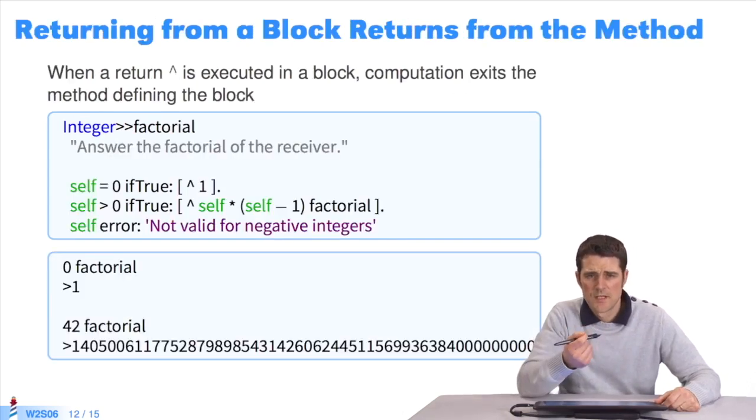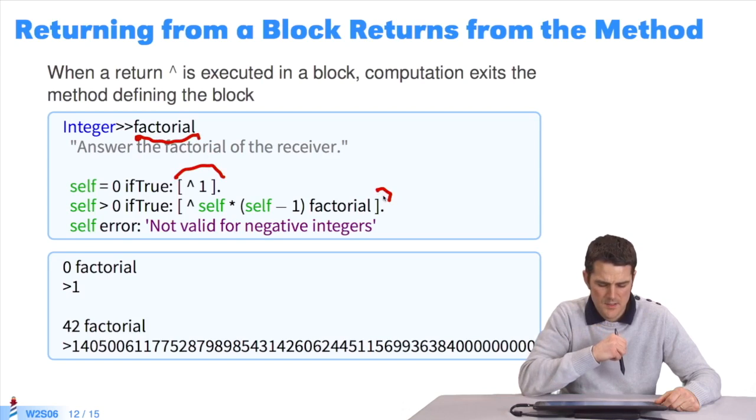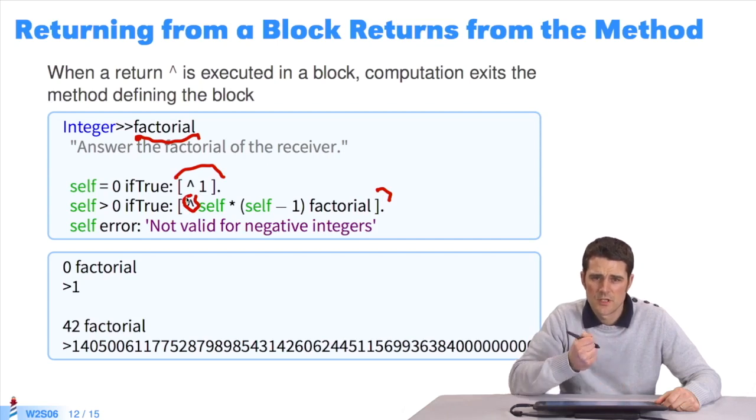Blocks are defined in methods. In a block, you can also use a return. This is an example from the class integer. The method is called factorial. There are several blocks in the method. These blocks contain returns, or carets. The return helps to exit the method factorial.